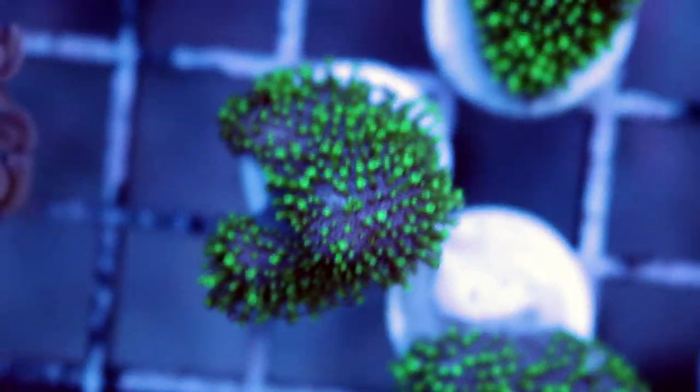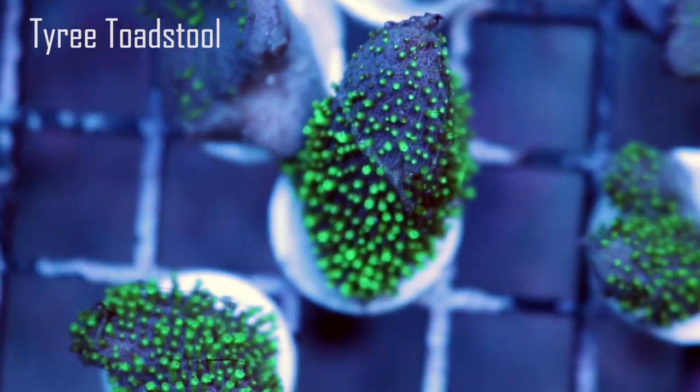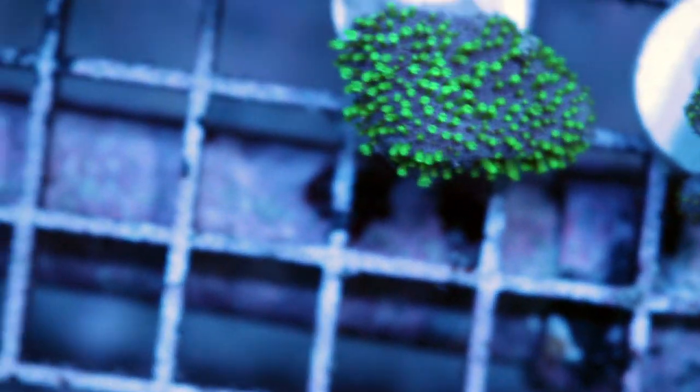It's in the leather family as well. These are called toadstools. So these are small tyree toadstool frags. They've got this nice vibrant green to them. Those are really easy to keep too. Good for beginners. I had a larger one, I guess somebody bought it. I wanted to show you a really cool larger one, but I'll show you these other soft corals that are really easy and fast growing and great for new tanks.